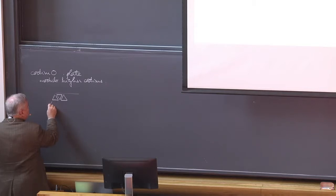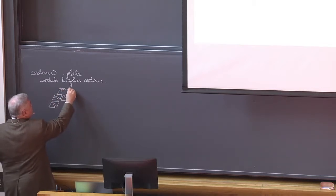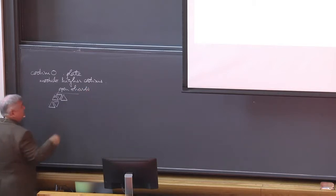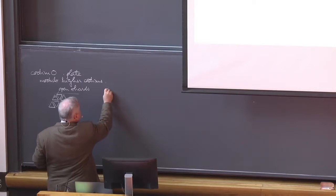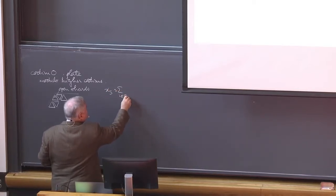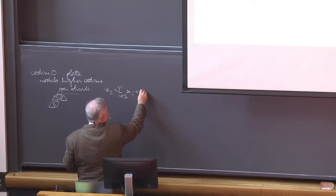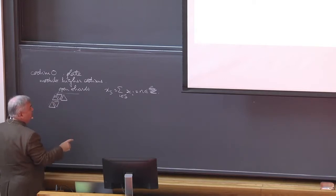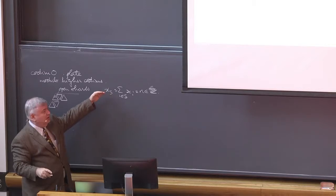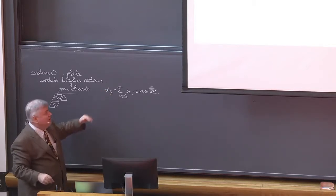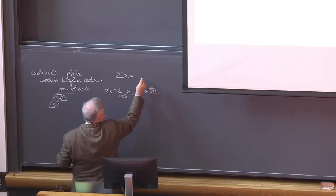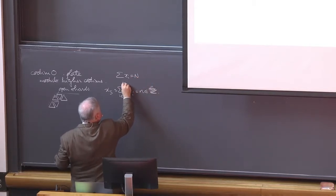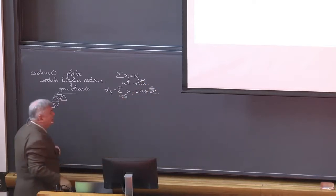Remember that the shards are the simplicial complex obtained by — so these are open shards. The shards are the simplicial complex made by the special hyperplanes, and the special hyperplanes were x_S, which is the sum of x_i for i in S, equal to some number n in Z. So the sum of x_i for i in S equals some number n. Cut with this, and these give you the shards.